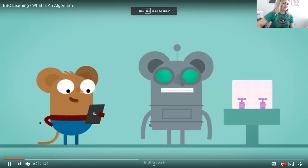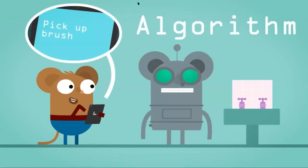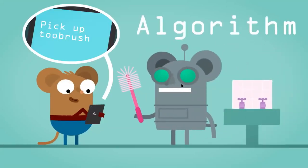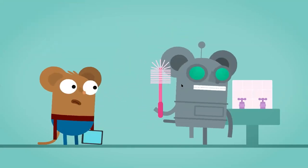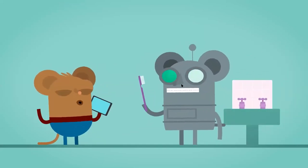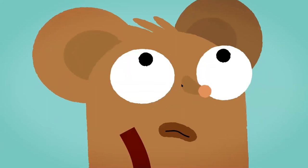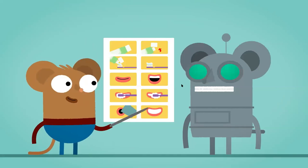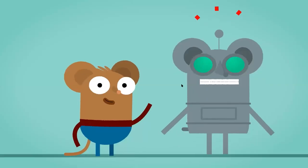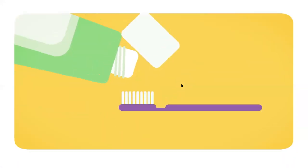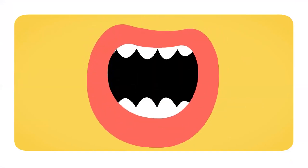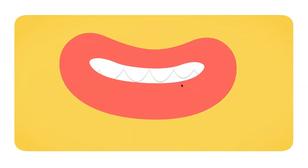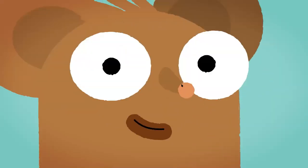If we want a computer to understand how to do something, we need to give it an algorithm. An algorithm is a list of steps you give the computer to solve a problem or get something done. Imagine you need to show someone how to brush their teeth so they can learn to do it themselves. The instructions go: one, open the toothpaste; two, put toothpaste on the toothbrush; three, open your mouth; four, brush your teeth nicely; five, rinse your mouth with water; six, smile. It's important to explain the right steps in the right order to get great results.